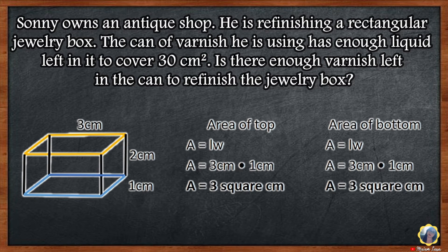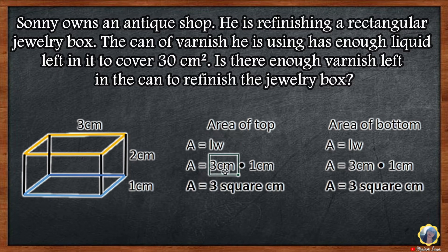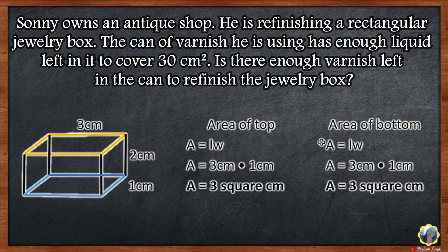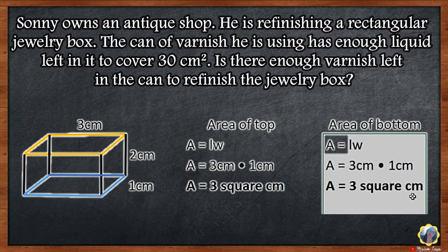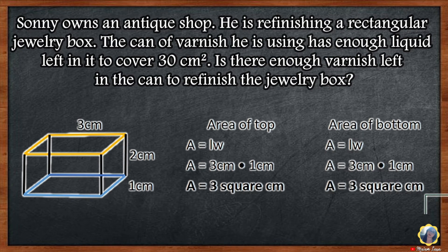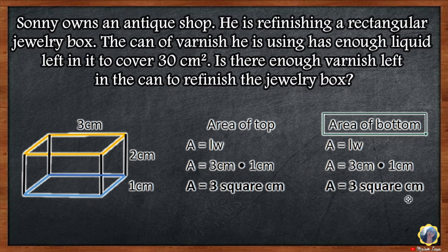Let's go through each face of the rectangular prism one by one. Area of top: the formula is length times width. Length is 3 cm and width is 1 cm, so 3 cm times 1 cm is equal to 3 square centimeters. Since top and bottom are parallel, the area for the bottom is also 3 square centimeters.